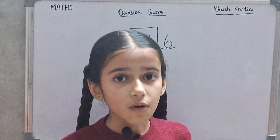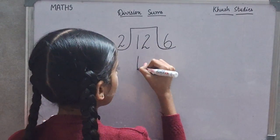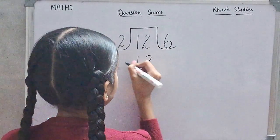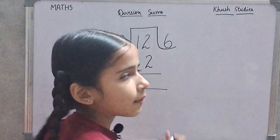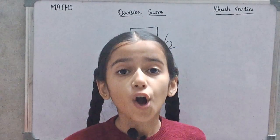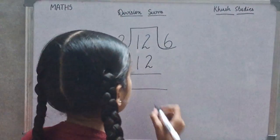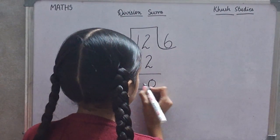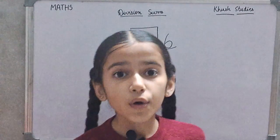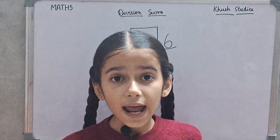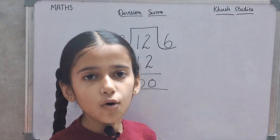In division, we always do subtraction. So, 12 minus 12 is equal to 0. So, each basket will get 6 mangoes.